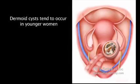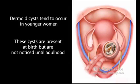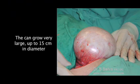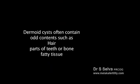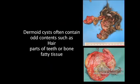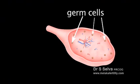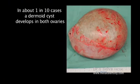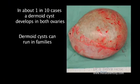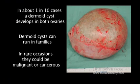Dermoid cysts tend to occur in younger women. These cysts are present at birth but are not noticed until adulthood. They can grow quite large, up to 15 cm across. Dermoid cysts often contain odd contents such as hair, parts of teeth or bone, and fatty tissue. This is because these cysts develop from the ovary's germ cells, which make eggs. These cells have the potential to develop into any type of cell and so can make different types of tissue. In about 1 in 10 cases, a dermoid cyst develops in both ovaries. Dermoid cysts can run in families. In rare occasions, they could be malignant or cancerous.